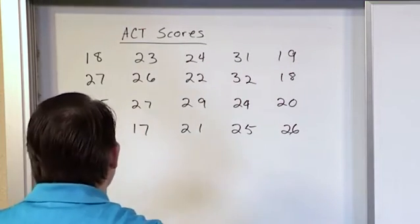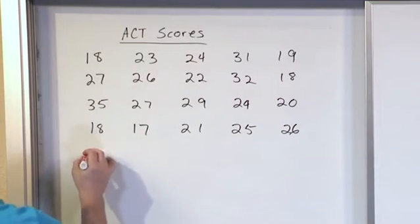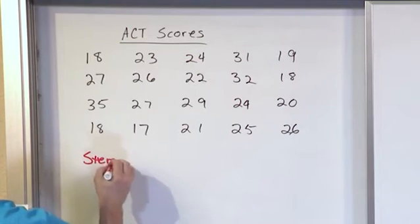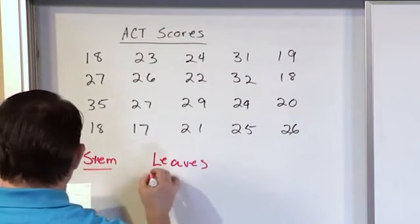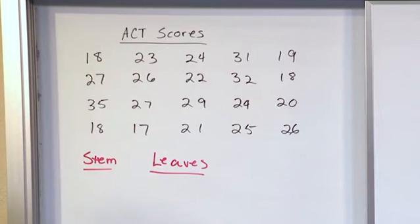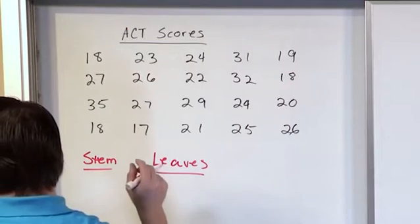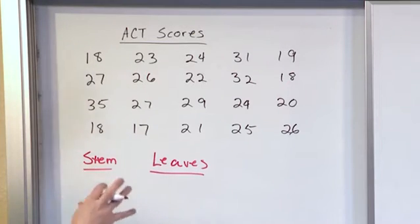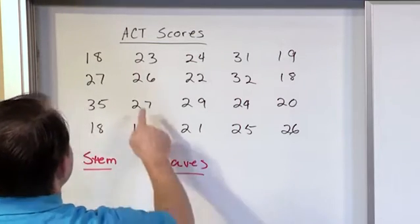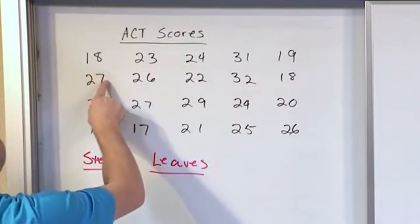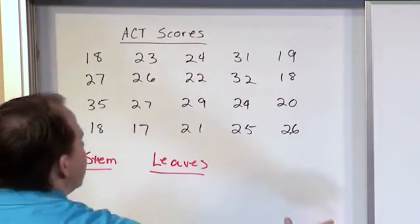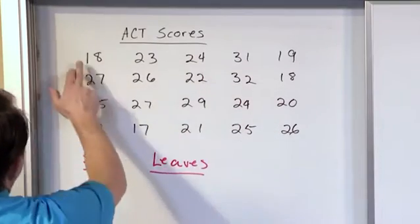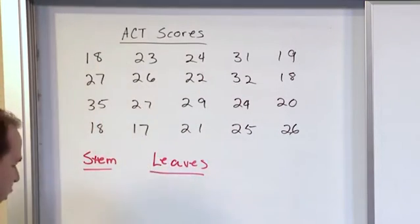What we have is we have what we call the stem, right, and then we have the leaf, or the leaves. Basically, in a stem and leaf plot, it retains the original data. The leaf is the last digit of the data. The stem is the rest. The leaf here is the last digit. Here's an 8, here's a 7, here's a 5, here's an 8, here's a 7, here's a 7, here's a 6. These are the leaves. In this case, we only have two-digit data, so everything else, which is the first digit in this case, is what we call the stem.